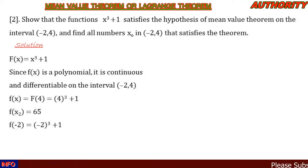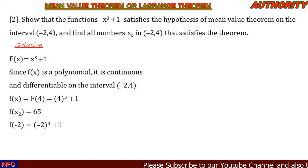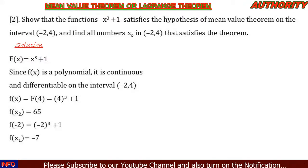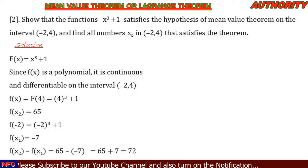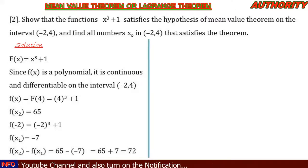Now let's find f(x₁). We have x₁ = -2, so f(-2) = (-2)³ + 1 = -8 + 1 = -7. So f(x₁) = -7.